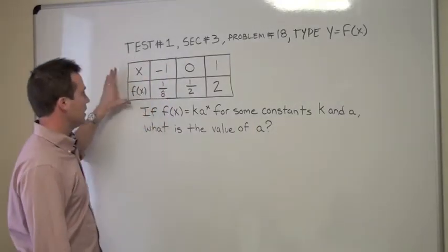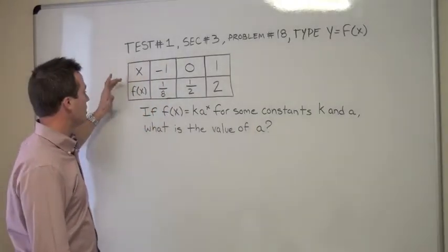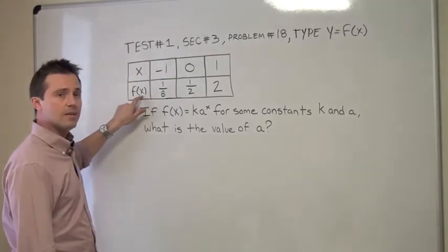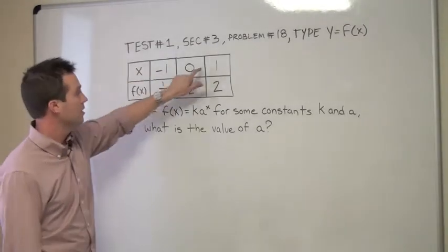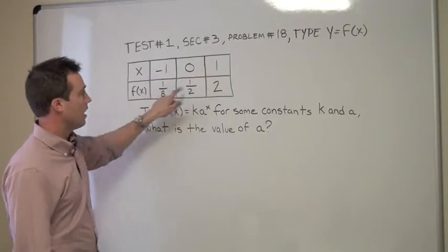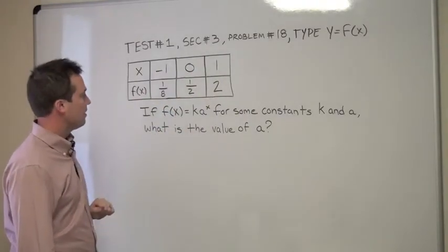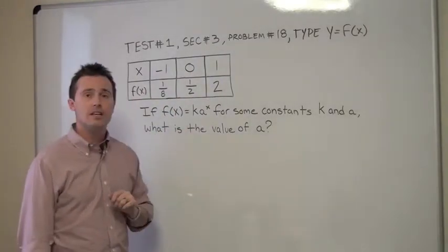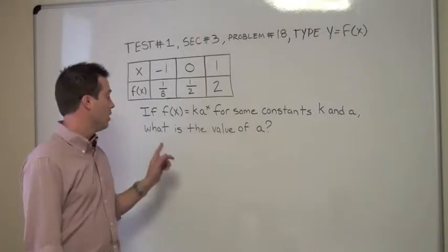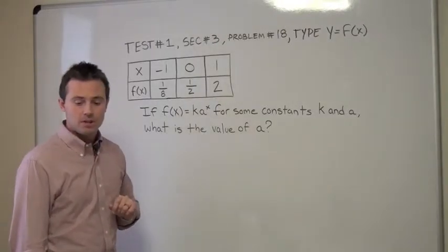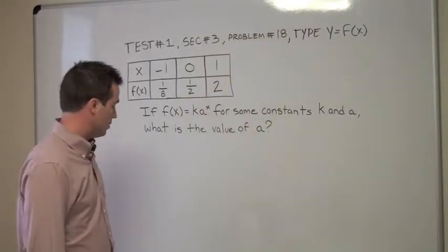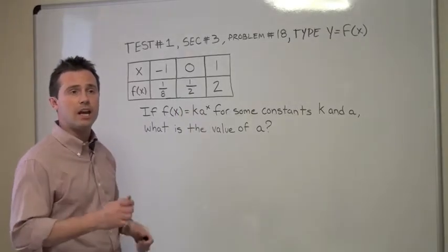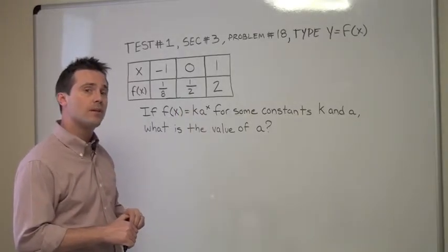In this question they've given us a chart of x values and f of x values. Remember, f of x is the same thing as y, so x is the input and these are our outputs. The question states: if f of x equals k times a to the x, for some constants k and a, what is the value of a? To solve this problem we're going to use the values they've given us and try to work through one variable at a time.